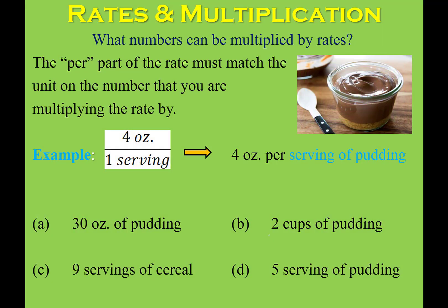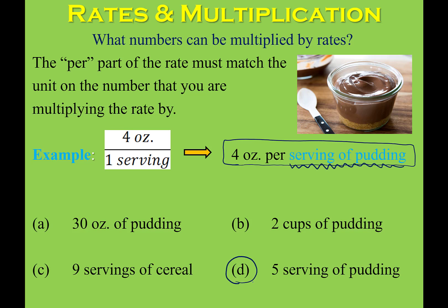Pause the video and see if you can figure out which of the four options could be multiplied by four ounces per serving of pudding. The answer is D — five servings of pudding. Notice that represents the unit after the per part of the rate: servings of pudding. Option B doesn't work because it says cups instead of servings. Option C talks about servings of cereal, the wrong item. And option A talks about ounces — the weight — which doesn't match the denominator of the rate.